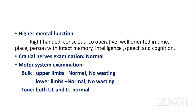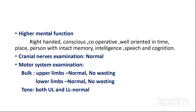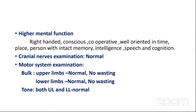Higher mental functions are normal. Cranial nerve examination is normal. In this muscle disease case, specifically examine cranial nerves 3, 4, 6 for neuromuscular junction involvement, and check gag reflex for dysphagia and hoarseness. Also examine the facial nerve specifically, as facioscapulohumeral dystrophy is a differential. Motor system: bulk in upper and lower limbs is normal, no wasting. Tone in both upper and lower limbs bilaterally is normal.